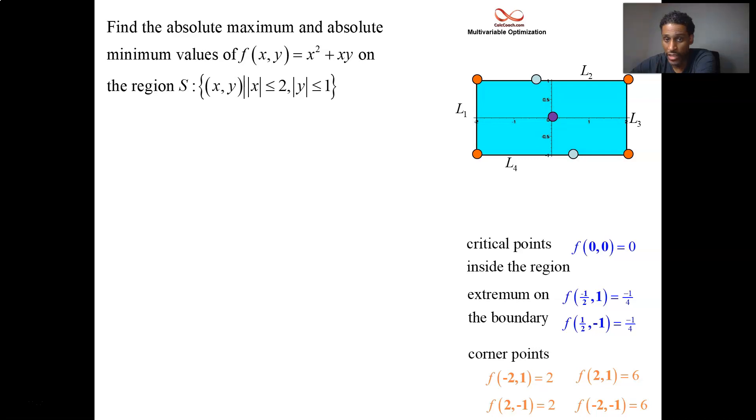So we're done. Who's the biggest? Who's the smallest? The absolute minimum value, negative one fourth, comes from those two points. The absolute maximum value, six, comes from those two points.